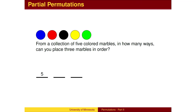We have 5 ways to pick the marble that will be placed first, 4 ways to pick the marble that will be placed second, and 3 ways to pick the marble that will be placed third. To calculate the total possibilities, we multiply according to the general counting principle.